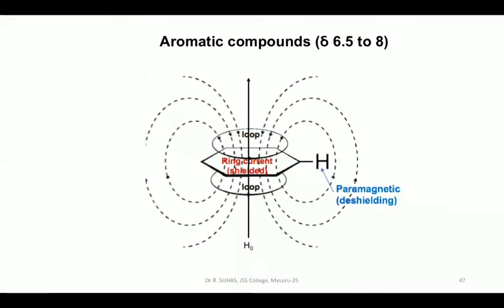For aromatic compounds, delta values are usually 6.5–8. Benzene has 6 pi electrons (3 pi bonds). Above and below the ring, the circulating pi electrons generate a ring current. Protons attached to the periphery of the benzene ring fall within the cup-shaped paramagnetic cone, giving deshielding effect and hence delta values of 6.5 to 8. This is how anisotropic effect plays an important role in different classes of organic compounds.